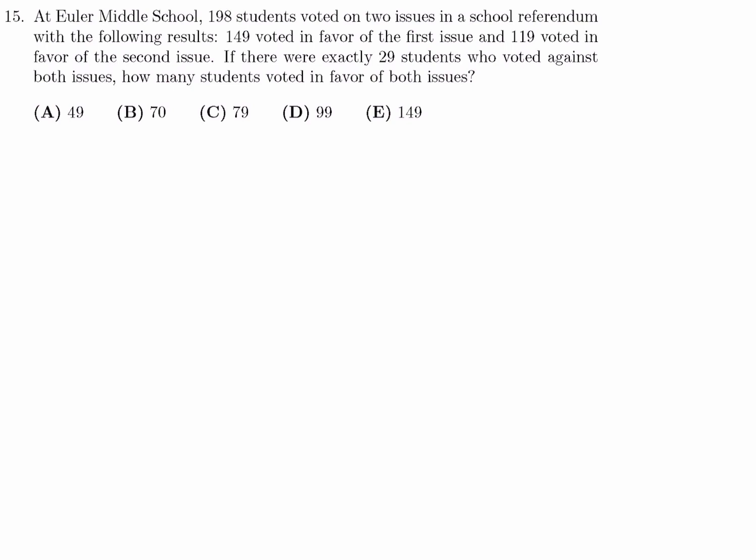At Euler Middle School, 198 students voted on two issues in a school referendum with the following results. 149 voted in favor of the first issue, and 119 voted in favor of the second issue. If there were exactly 29 students who voted against both issues, how many students voted in favor of both issues? All right, make a list here. Students voted in favor of issue 1, favor of issue 2. Favor of 1, but against issue 2. Against issue 1, in favor of issue 2. And finally, against both, 1 and 2. Now let's see what kind of help they give us.